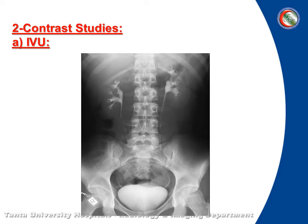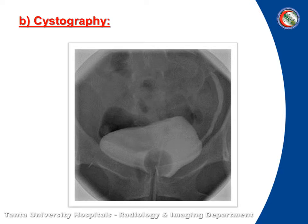In contrast studies, first with IVU, there is total opacification of both pelvicalyceal systems, both ureters, and total opacification of the urinary bladder — no filling defect, no diverticula, no strictures. In cystography, also complete opacification of the urinary bladder with no filling defect or diverticula, only the smooth rounded filling defect of the balloon.